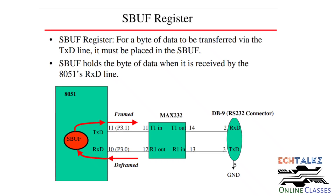Serial communication uses special function registers. The first is the SBUF register. To send data from the microcontroller, we place data in the SBUF register. It then frames the data by adding a start bit, the 8 data bits, and a stop bit, and sends it. On reception, framing is reversed: the start and stop bits are removed, and the real 8-bit data is saved in the SBUF register.